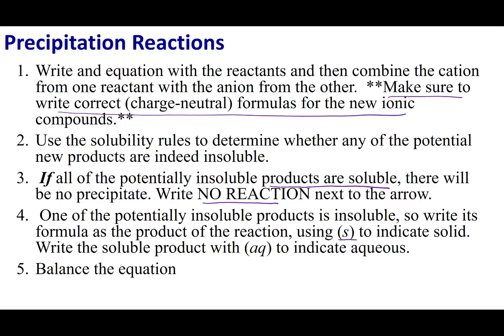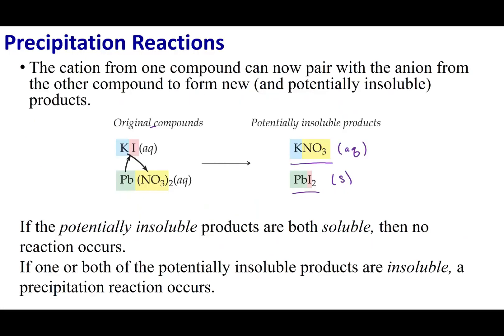Once we've established all the states of our products, we balance the equation as with every reaction. In this case, we have two iodides, so I put a 2 in front of potassium iodide and a 2 in front of KNO3. We now have the appropriate number of nitrates on both sides — two nitrates — and one lead on each side. Now we have a fully balanced equation.